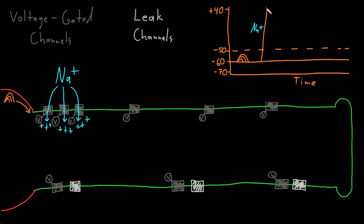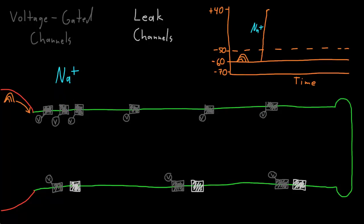The action potential usually peaks around positive 40 millivolts, not quite reaching the sodium equilibrium potential of around positive 50 millivolts. The reason is that the voltage-gated sodium channels automatically start to close at the higher potential values, stopping sodium from flowing in. After they close, they enter a special state called the inactivated state, and they are unable to open at any membrane potential for a brief time.